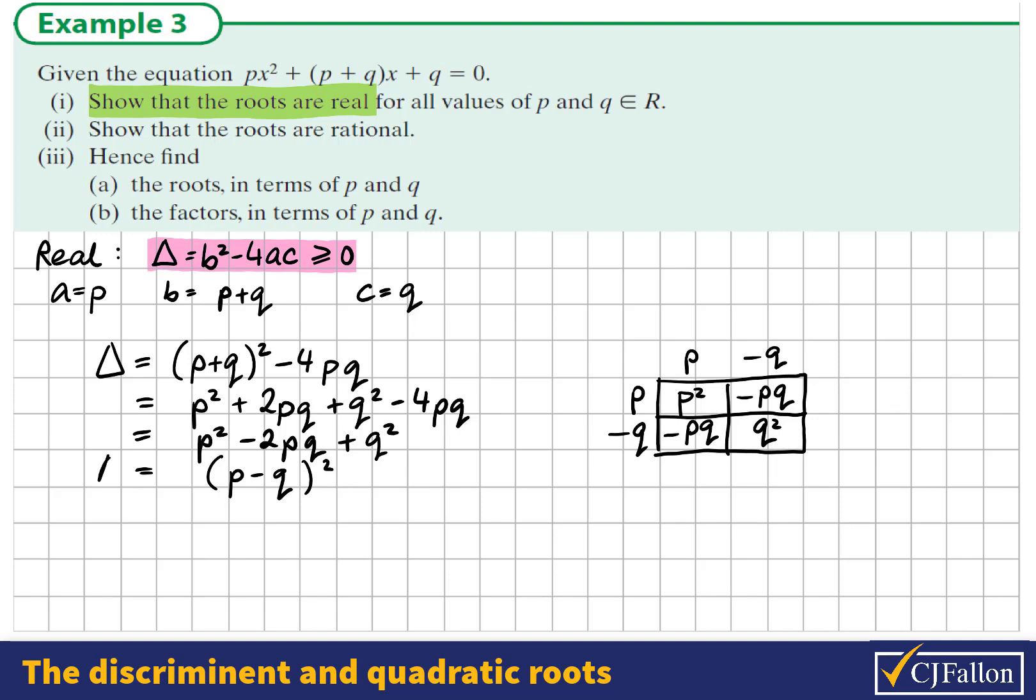Now, what we know is if we square something, it can't be negative. So we've kind of proven what we wanted to prove. So if we square (p - q), the answer to that has to be positive, given that p and q themselves are real numbers. So the discriminant must be greater than or equal to zero. Therefore, we have proven that the roots for all values of p and q of the given quadratic are real.